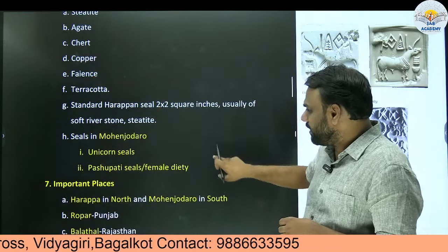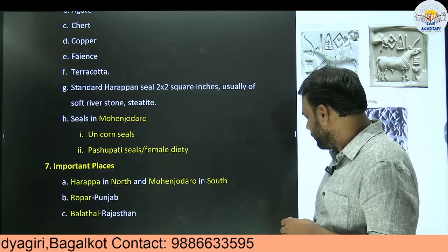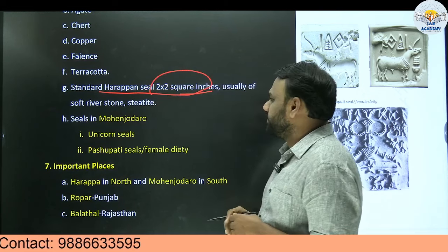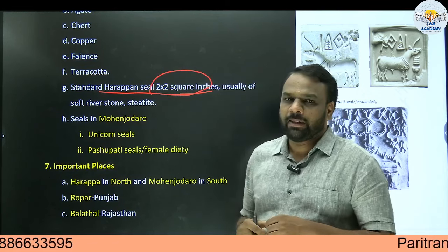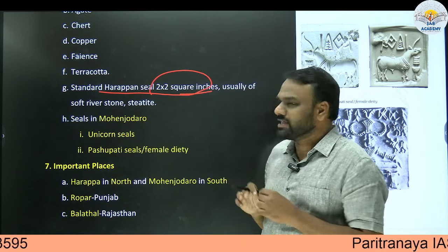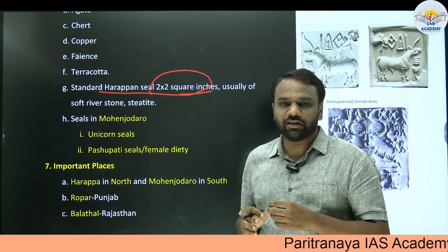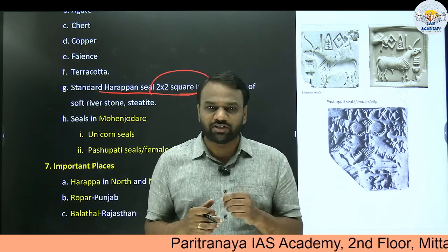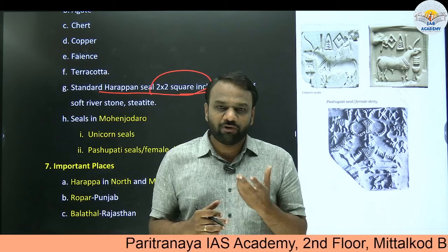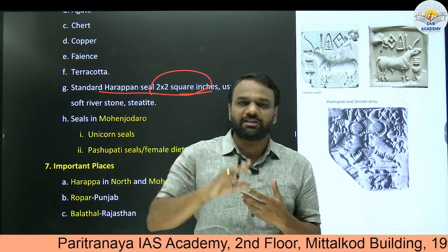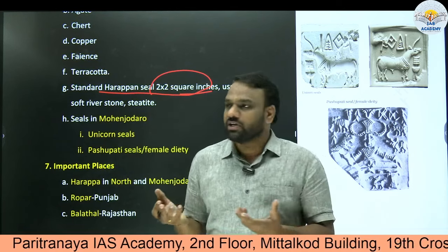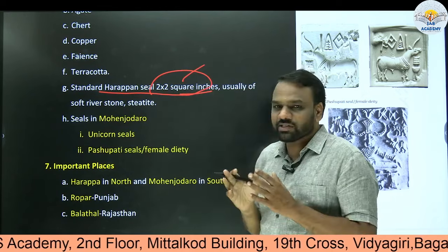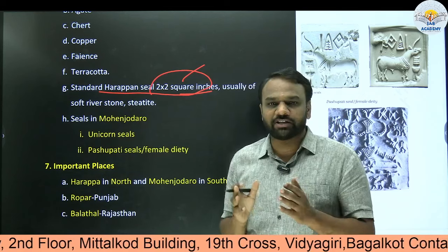Another important point beneficial from a mains point of view: the standard Harappan seal was 2×2 square inches, usually of soft river stone or steatite. This 2×2 standard size indicates that even at the time of the Indus Valley civilization, there was standardization — just like today where 1 kg here is the same as 1 kg elsewhere. These seals of 2×2 square inches indicate some kind of standardization which prevailed during the Indus Valley civilization.